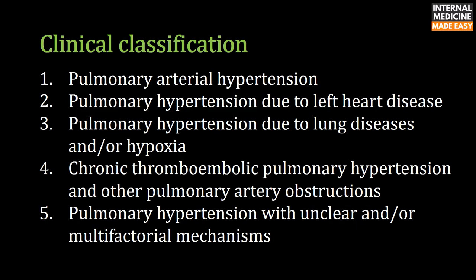Pulmonary hypertension can be clinically classified into five main groups: Group 1 is pulmonary arterial hypertension; Group 2 is pulmonary hypertension due to left heart disease; Group 3 is pulmonary hypertension due to lung diseases and/or hypoxia; Group 4 is chronic thromboembolic pulmonary hypertension and other pulmonary artery obstructions; and Group 5 is pulmonary hypertension with unclear and/or multifactorial mechanisms.